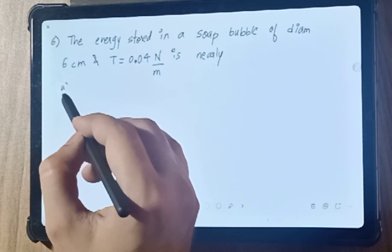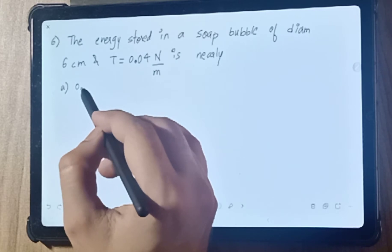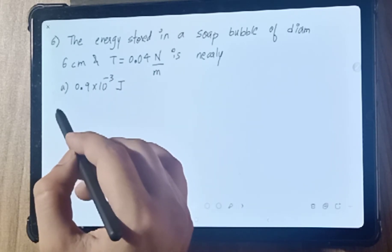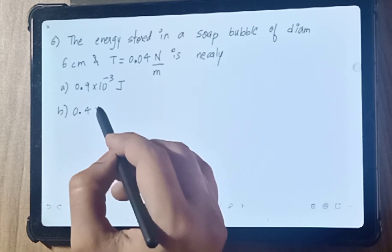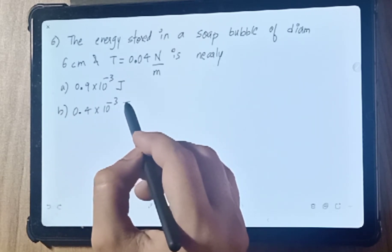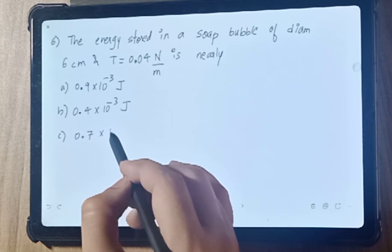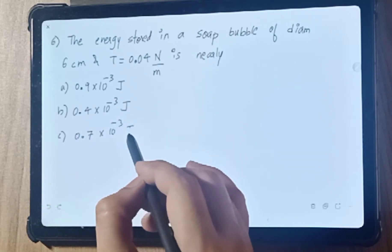Option A: 0.9 × 10⁻³ joule. Option B: 0.4 × 10⁻³ joule. Option C: 0.7 × 10⁻³ joule.